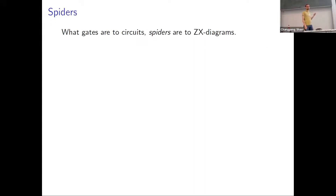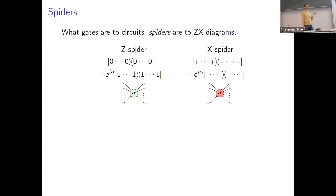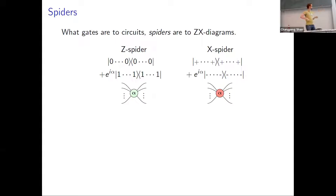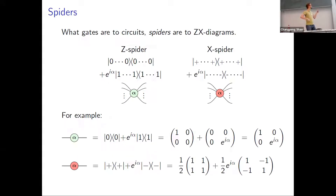What actually is a ZX diagram? Just as gates are to circuits, spiders are to ZX diagrams. Spiders come in two flavors: Z spiders and X spiders, depicted in green or red. These can have any number of inputs and outputs — they're just linear maps. A Z spider is like a generalized Kronecker delta, forcing all inputs and outputs to be the same state; if they're in the |1⟩ state, they get a phase α. The X spider is exactly the same but in the X basis. With a single input and output, these are just your Z and X phase gates, where α is the rotation angle.